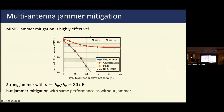Looking at the performance, this is a very simple but powerful result. With a 256-antenna base station serving 32 users, if the jammer is 30 dB stronger than the user power and you do nothing, you get an error floor that is devastating for communication. But using either POS or robust LMMSE, you can basically recover the jammer-free performance — and there's no real difference between the two methods in this scenario. So we know two ways of almost perfectly getting rid of jammers.